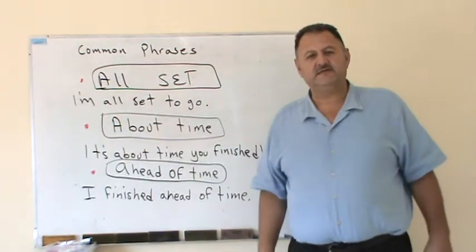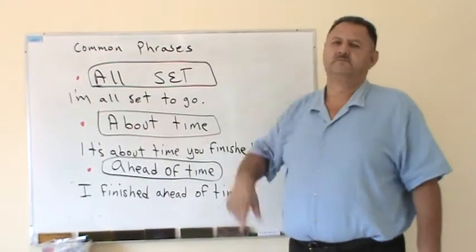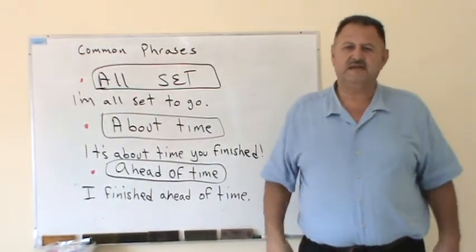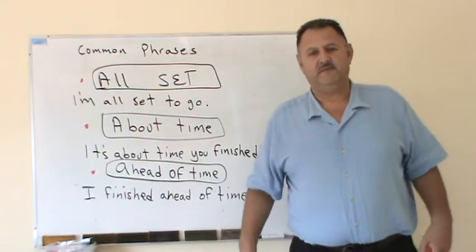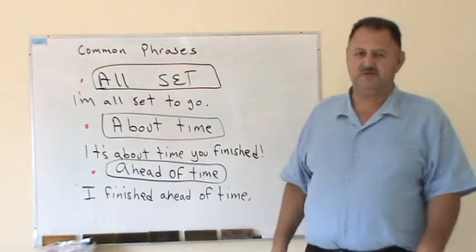So, look at these examples. Vean estos ejemplos que les puse. I'm all set to go. Estoy listo para ir, o para irme. Estoy preparado y listo para irme. I'm all set to go.